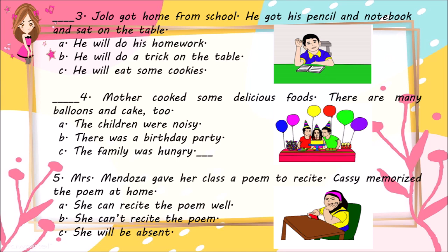Number 4: Mother cooked some delicious foods. There are many balloons and cake too. A. The children were noisy. B. There was a birthday party. C. The family was hungry.